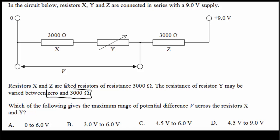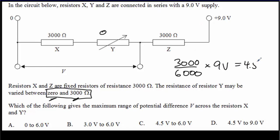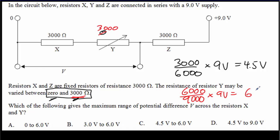Let's try putting in values at the extremes — 0 and 3000 — for our variable resistor. If we put in a 0 ohm resistor, then V would be equal to 3000 divided by 3000 plus 3000, times the battery voltage of 9 volts, giving 4.5 volts. Now cranking the resistance up to 3000, our fraction becomes 6000 over 9000, times 9 volts, giving 6 volts. So V ranges between 4.5 and 6 volts. The correct answer is C.